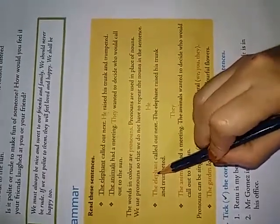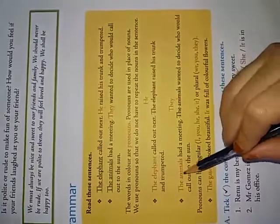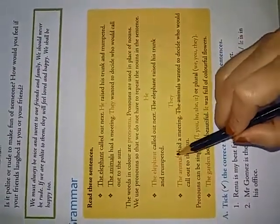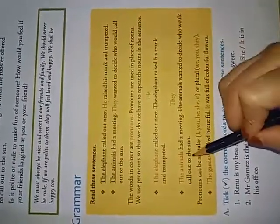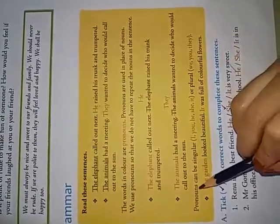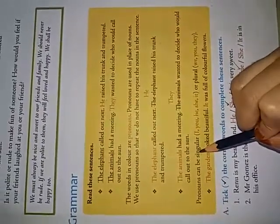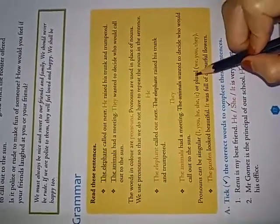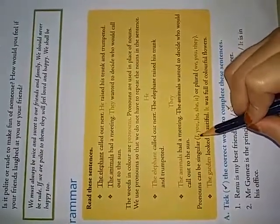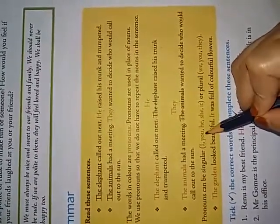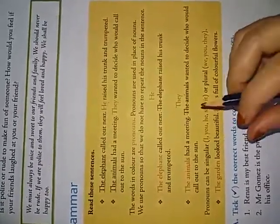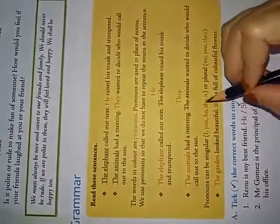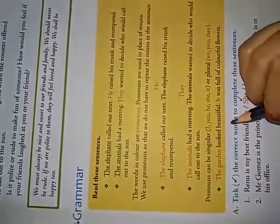Name of an animal. So, male person. We are using he here. The animals had a meeting. The group of animals. We are using they. They wanted to decide who would call out to the son. Now, pronouns will be of two types. It may be a singular pronoun or it may be a plural pronoun. Singular pronoun contains I, you, he, she, it. They are singular. Nothing but single persons. I means one person. You also one person. He also one person. She also one. And it also one thing.